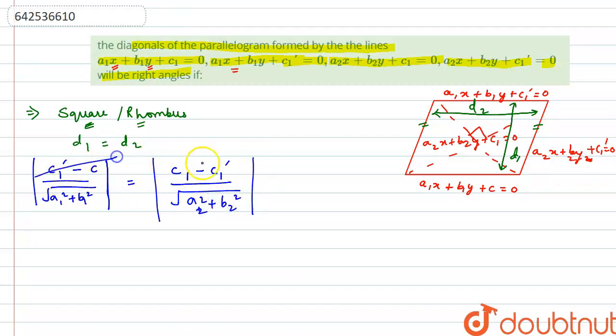If this is mod, these two will cancel out because the mod value of these both will be equal. And squaring both sides, then 1 by a1 square plus b1 square is equal to 1 by a2 square plus b2 square. Simplifying, then a2 square plus b2 square will be equal to a1 square plus b1 square.